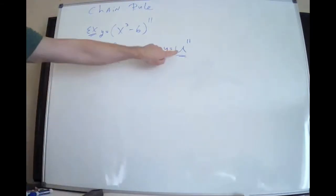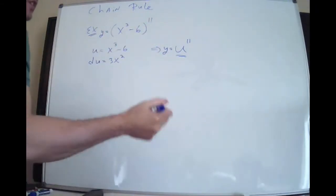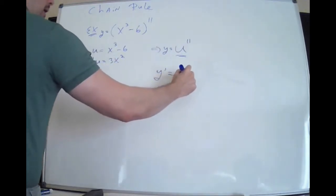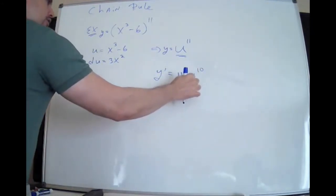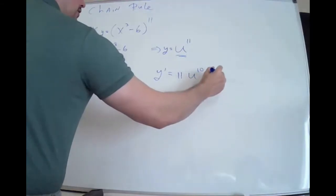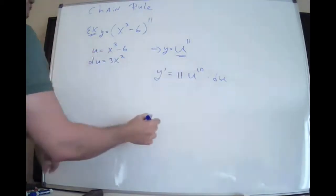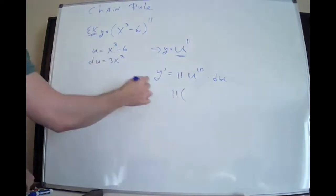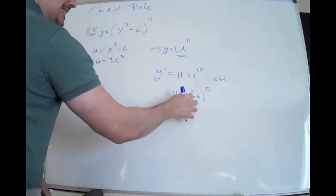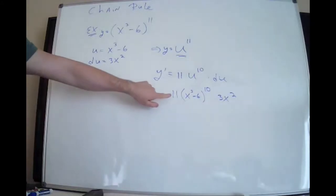Now I want to take the derivative of u to the 11th, understanding that u has x in it — it's a function of x. I use the general power rule: multiply by the power and subtract one. However, I also need the derivative of u — this is where the chain part comes in. Now the problem is over: just put x³ minus 6 back inside where it was, and its derivative goes on the outside.